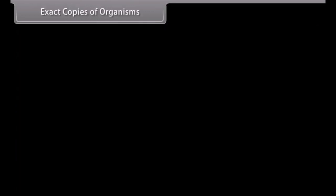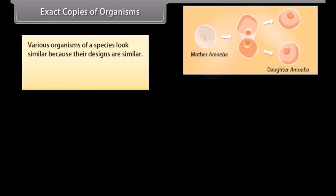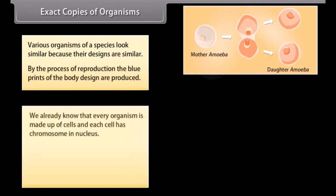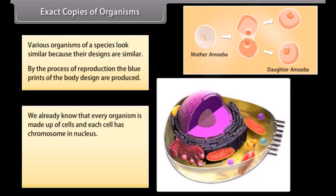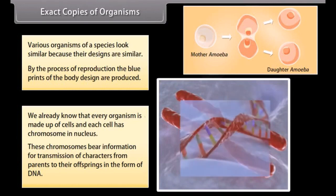Various organisms of a species look similar because their designs are similar. By the process of reproduction, the blueprints of the body design are produced. Every organism is made up of cells, and each cell has chromosomes in the nucleus. These chromosomes bear information for transmission of characters from parents to their offspring in the form of DNA.